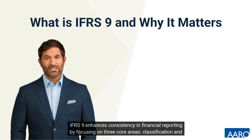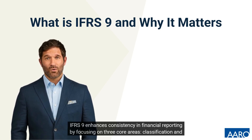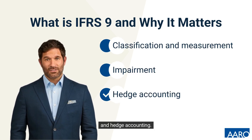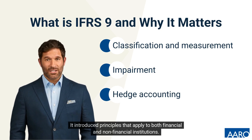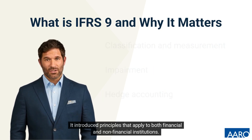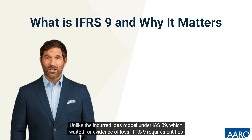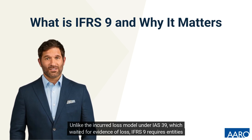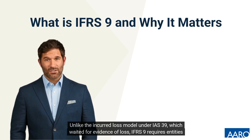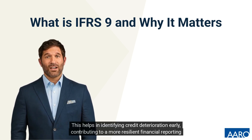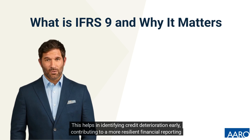IFRS 9 enhances consistency in financial reporting by focusing on three core areas: classification and measurement, impairment, and hedge accounting. It introduced principles that apply to both financial and non-financial institutions. Its most notable feature is the expected credit loss model for impairment. Unlike the incurred loss model under IAS 39, which waited for evidence of loss, IFRS 9 requires entities to estimate losses ahead of time, helping identify credit deterioration early and contributing to a more resilient financial reporting system.